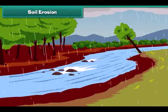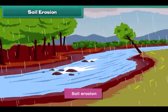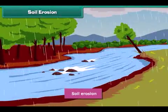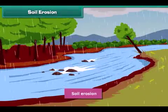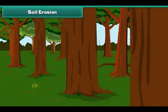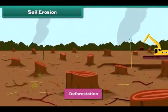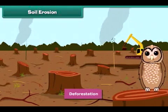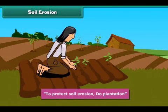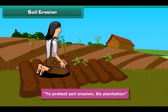Do you know what soil erosion is? Sometimes the soil is carried away by wind and water — this is called soil erosion. You will be surprised to know that cutting of trees also causes soil erosion. Soil erosion makes the soil infertile. We can protect against soil erosion by planting more and more trees.